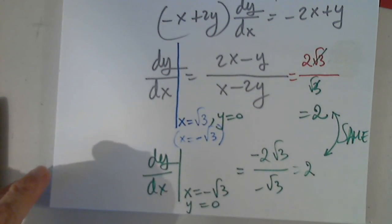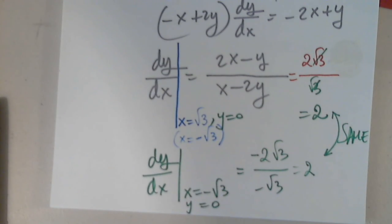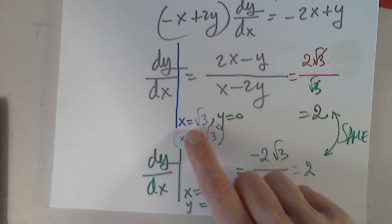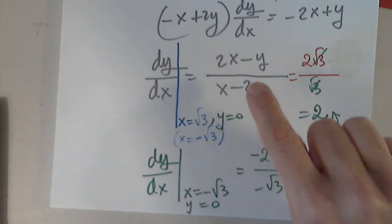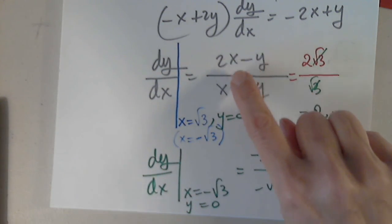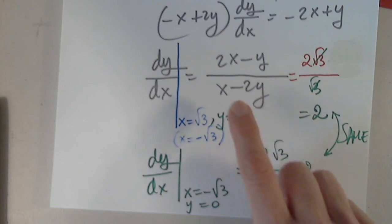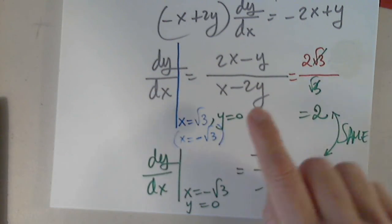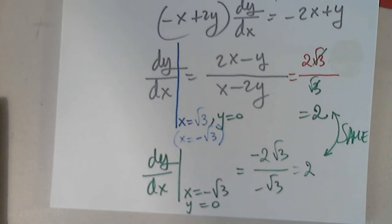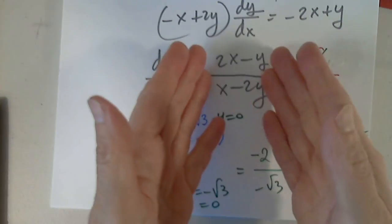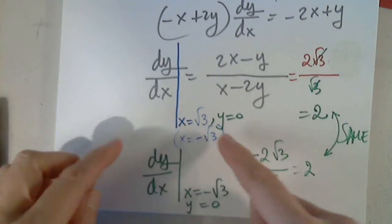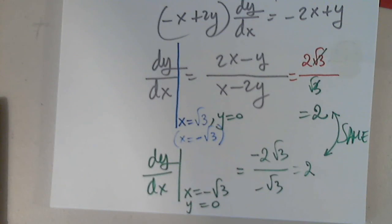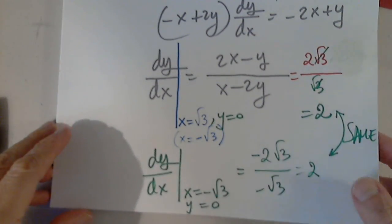Student question: What made you put 2 times the square root of 3 over the square root of 3? Answer: x is the square root of 3, so I replace x by the square root of 3 in the numerator and denominator. y equals 0, and that's why those terms are 0. I'm just replacing these values in the expression.